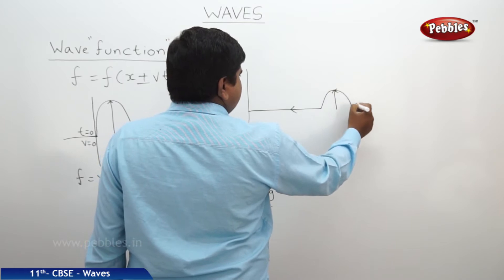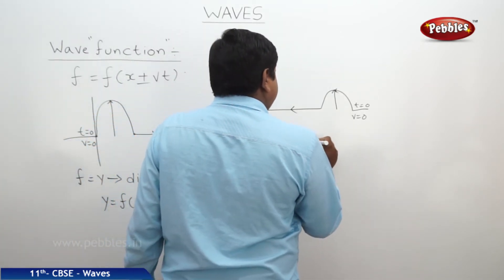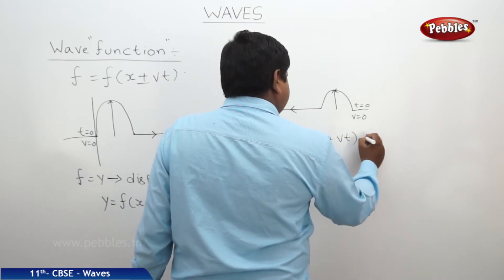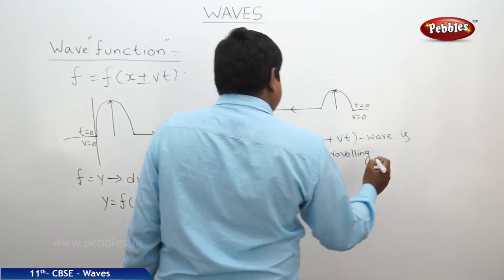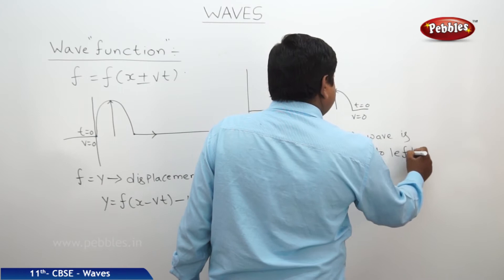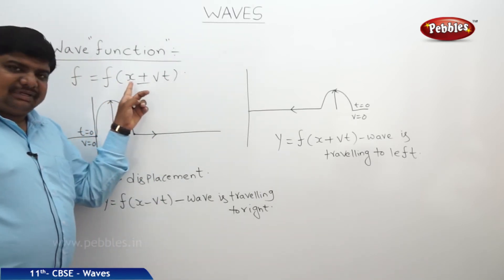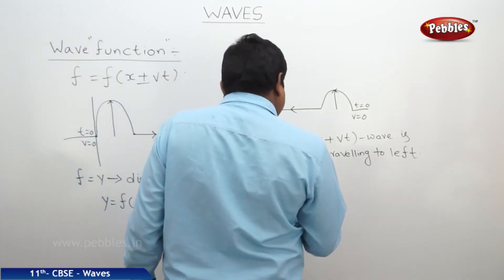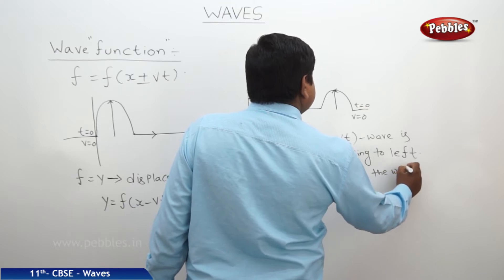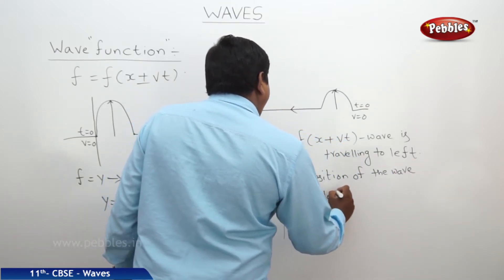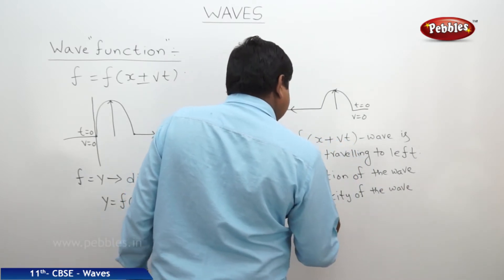When the wave moves in the opposite direction, we can expect t equal to 0 and v equal to 0. In this case, the displacement of the wave is expressed as y equal to f of x plus vt, representing the wave travelling to the left. This is called the wave function. Here, x is the position of the wave, v is the velocity of the wave, and t is the time period of the wave.